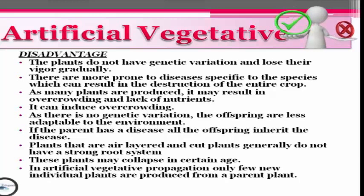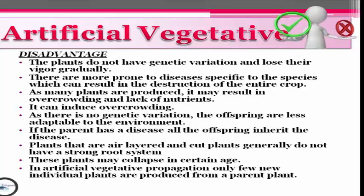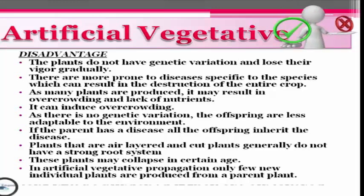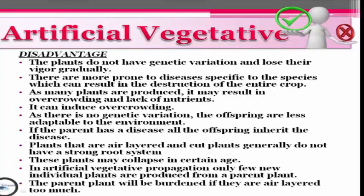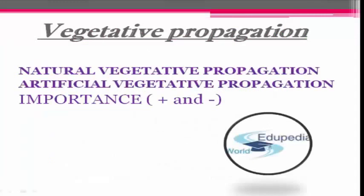In artificial vegetative propagation, only a few new individual plants are produced from a parent plant. And lastly, the parent plant will be burdened if it is air-layered too much. So that is the importance of why we need to study vegetative propagation. Across three videos, we have covered natural propagation, artificial propagation, and both the positive and negative aspects of this propagation. Thank you for listening to Etopida World. I hope you enjoyed the discussion. Thank you. Bye.